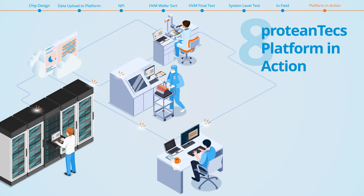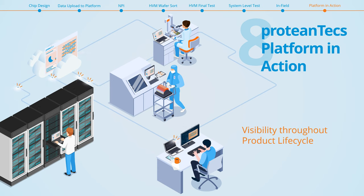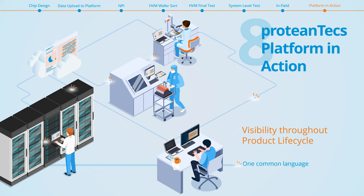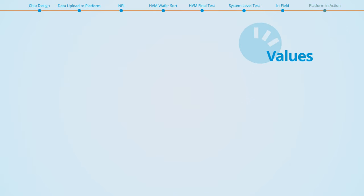From design to production to system integration and during normal operation in the field, the Proteus platform provides unprecedented visibility into performance and reliability. The platform uses advanced machine learning and data analytics to monitor each unique device throughout its useful life. Using the Proteus platform will give you a competitive advantage and increase the value of your products by providing a unique and powerful feature for reliability monitoring.